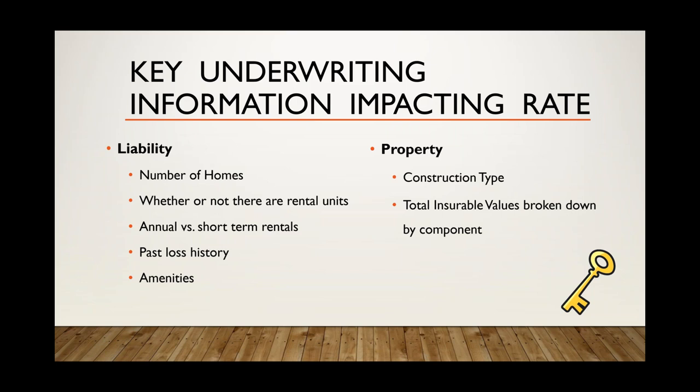For property coverage, we need to know the construction type. If there is a common building the association owns — like a clubhouse, gatehouse, or even a small shed for landscaping tools — we need total insurable values broken down by components. If they have a mail kiosk, outdoor monument or sign, and street or light poles, we just need to know the limit they would want for each property component listed.